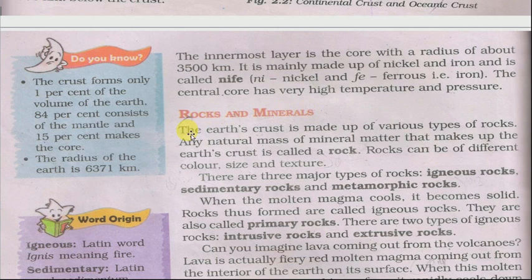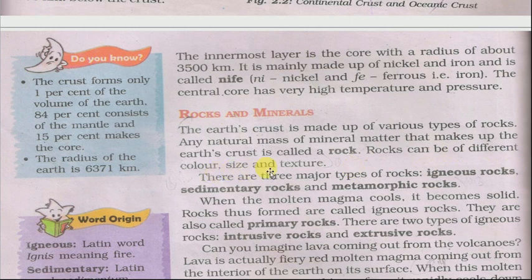The Earth's crust is made up of various types of rocks. Any natural mass of mineral matter that makes up the Earth's crust is called a rock. Rocks can be of different color, size and texture. There are three major types of rocks: igneous rocks, sedimentary rocks, and metamorphic rocks.